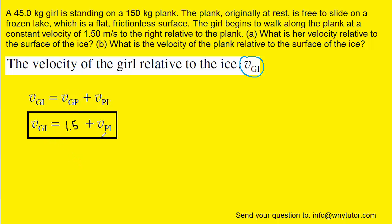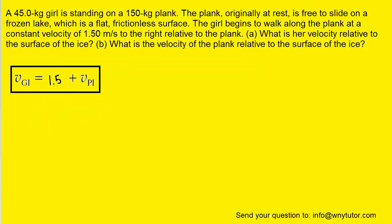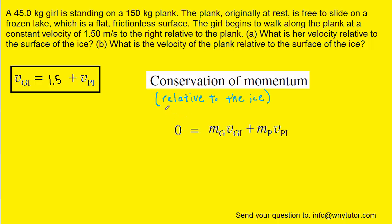This is a result we will hold on to and refer to shortly. Next, we will use the conservation of momentum, relative to the ice. Initially, the girl and the plank are at rest, so the initial momentum is zero. But as the girl begins to walk across the plank, both she and the plank are moving, giving us the final momentum of the girl and the final momentum of the plank. The subscript 'i' reminds us that each velocity is relative to the ice.